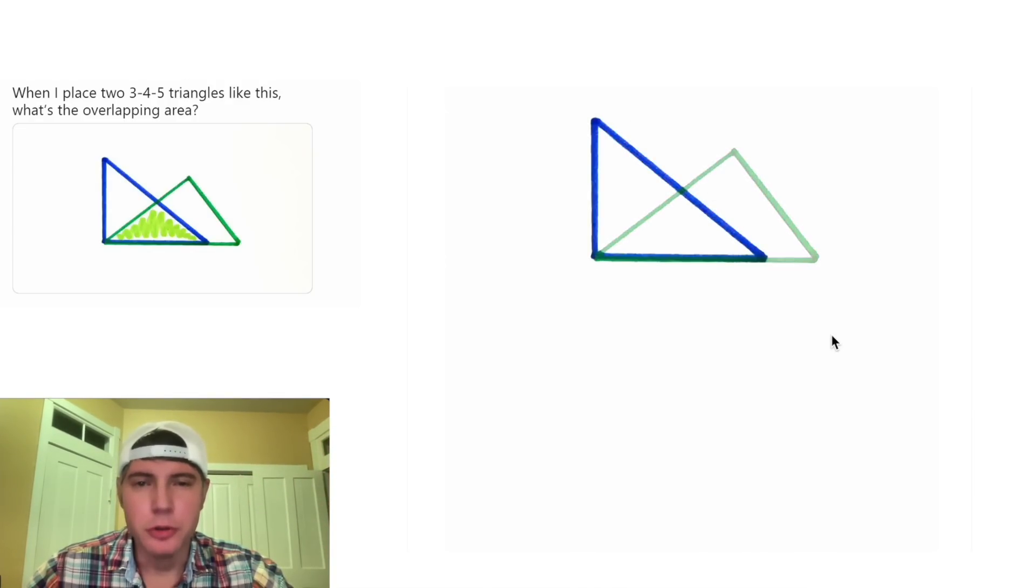First, let's focus on this blue triangle. This looks like the smallest side, so it would be the three. This would be the four, and the hypotenuse would be the five. Let's label the angle opposite the smallest side as theta, and that'll be the smallest angle.